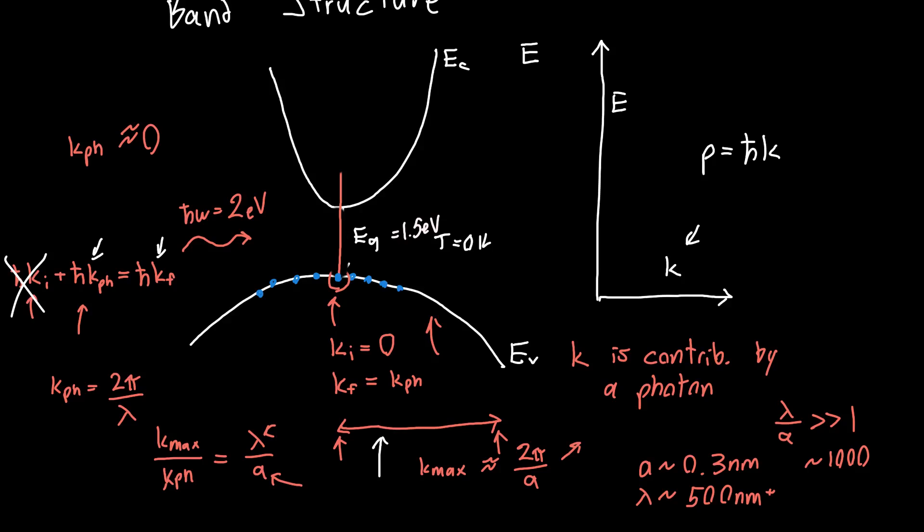So if the band gap here was about 1.5 eV and the incoming photon was about 2 eV, then our electron - if this electron right here were to absorb a photon it would end up here, at about 0.5 electron volts above the band edge near the very center of the diagram.